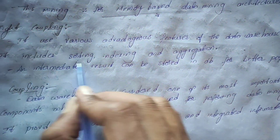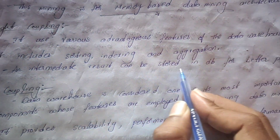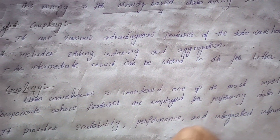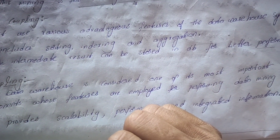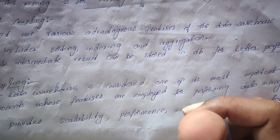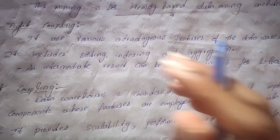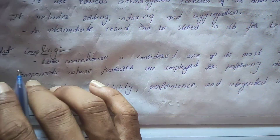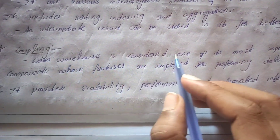It contains deep features and intermediate results can be stored in the database for better performance. Semi-tight coupling architecture makes use of these stored intermediate results to achieve better performance.